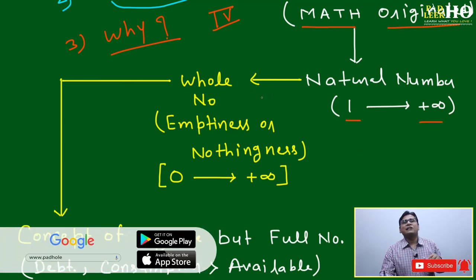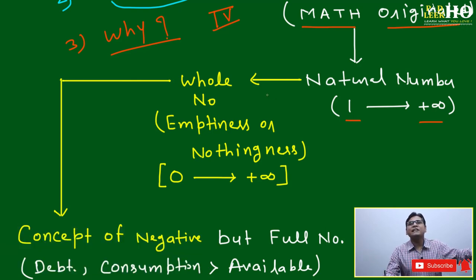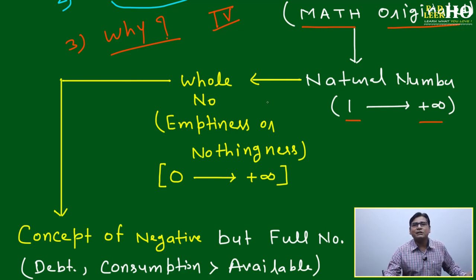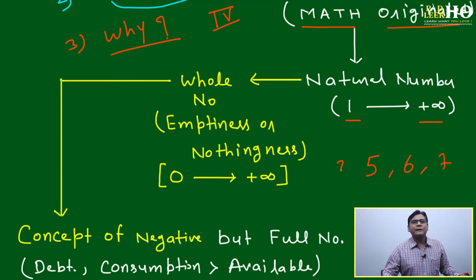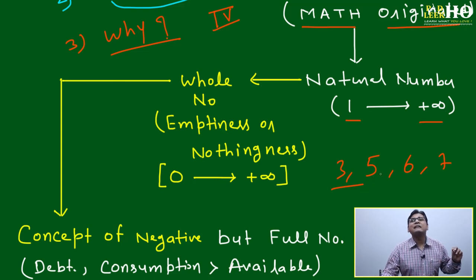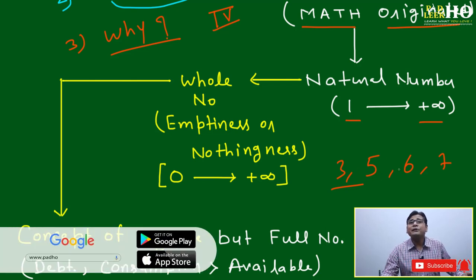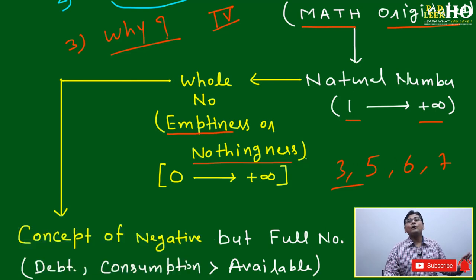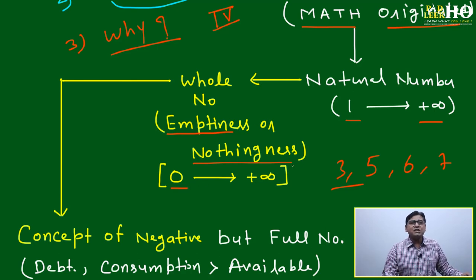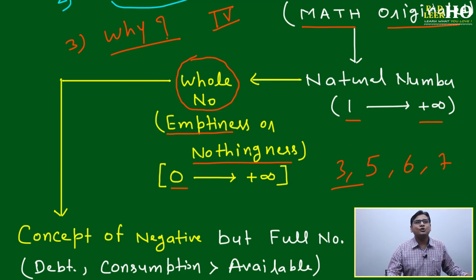After natural number came another concept. In any society, some people have domestic animals — one person having two, another three, another five — counting is possible. But two persons out of ten don't have anything. How do you define emptiness, nothingness? If you don't have anything — nothingness — the concept of zero has come. Zero is included with natural number, and it becomes the whole number. The difference between whole number and natural number is only zero — whole number starts from zero and goes to plus infinity.